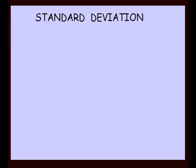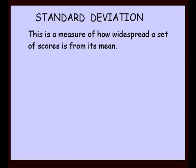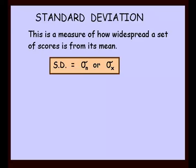We'll look at a lesson on standard deviation. This is a measure of how widespread a set of scores is from its mean. The symbol for standard deviation looks like an O with a little hat, or the same symbol with a little x next to it instead of n. That's our standard deviation symbol — you'd be looking for that sort of symbol on your calculator when it comes time to use it.